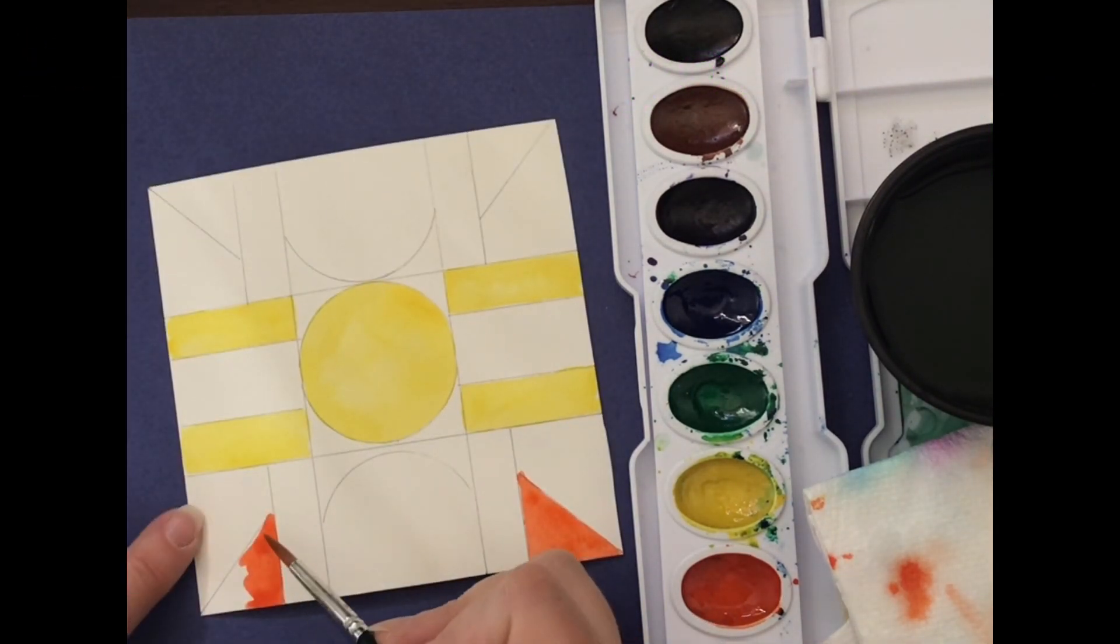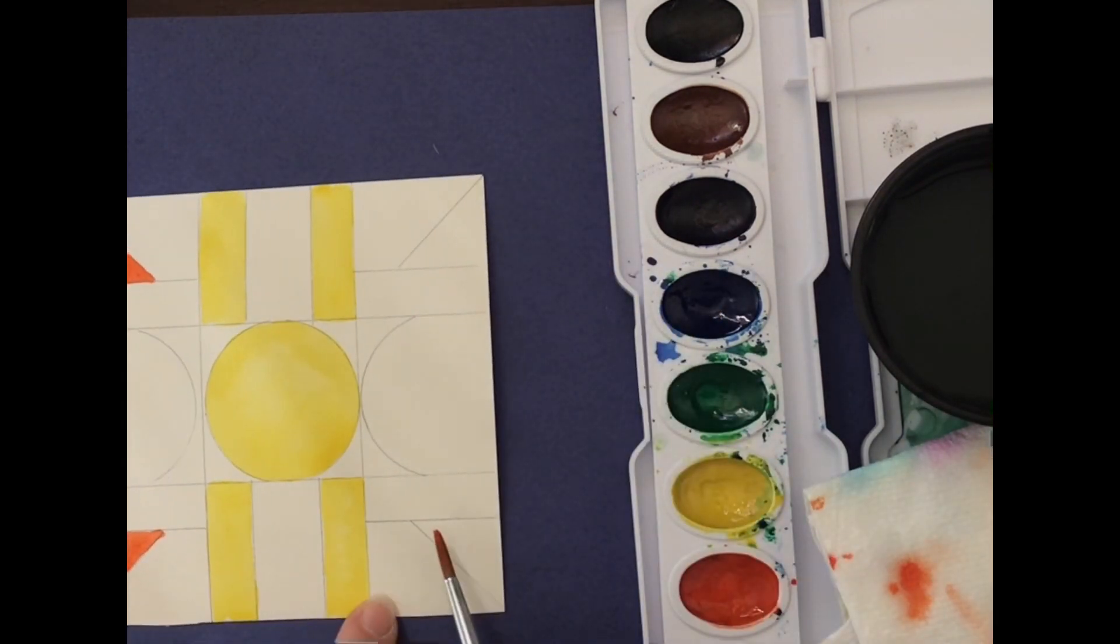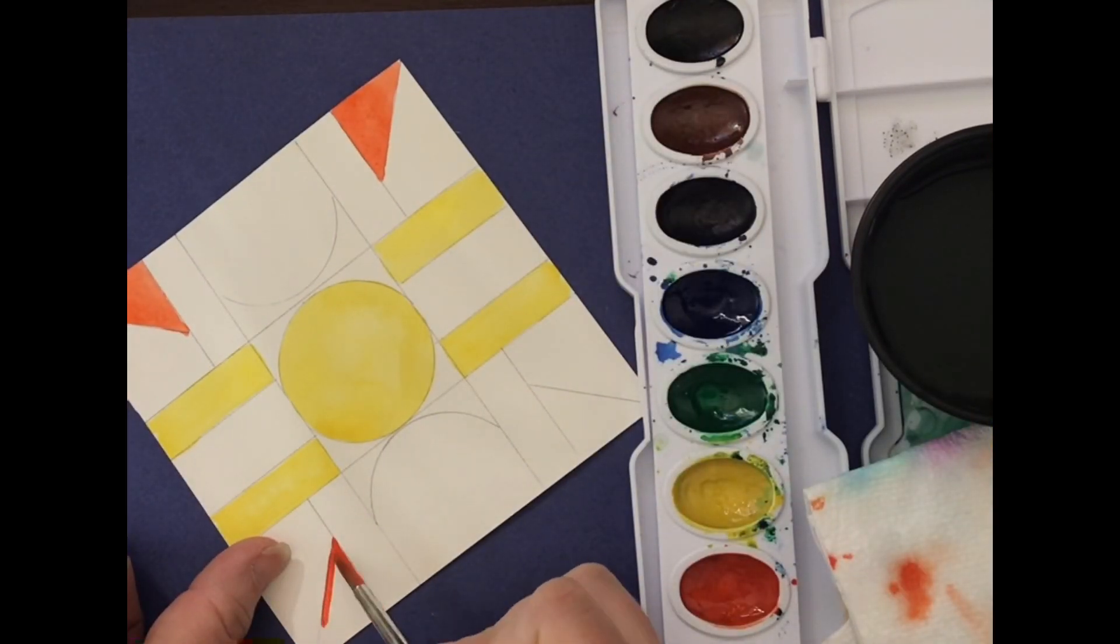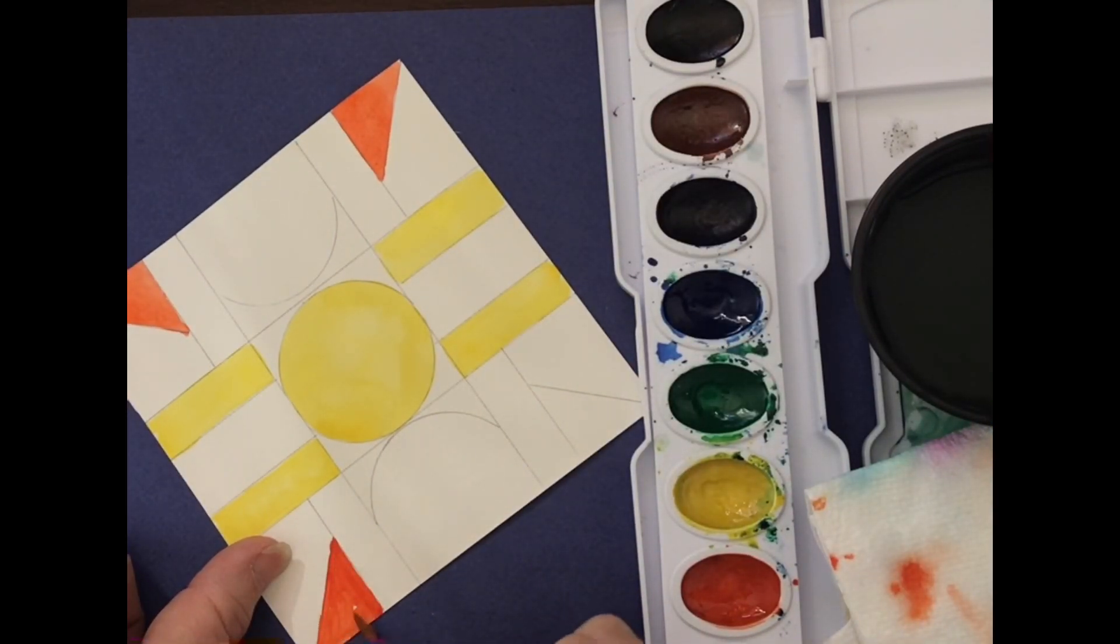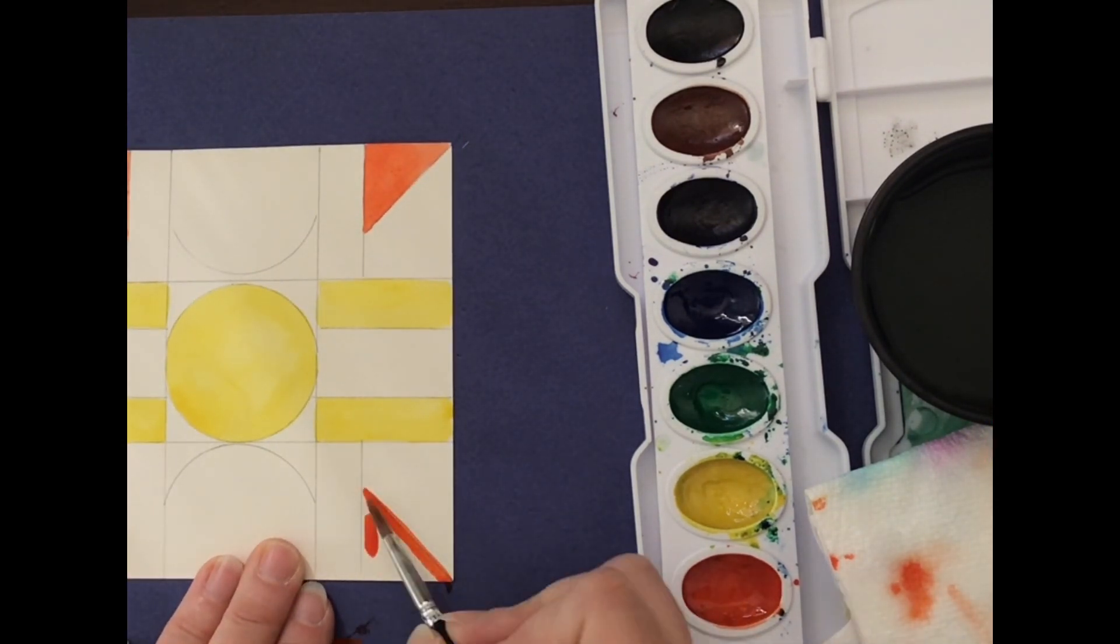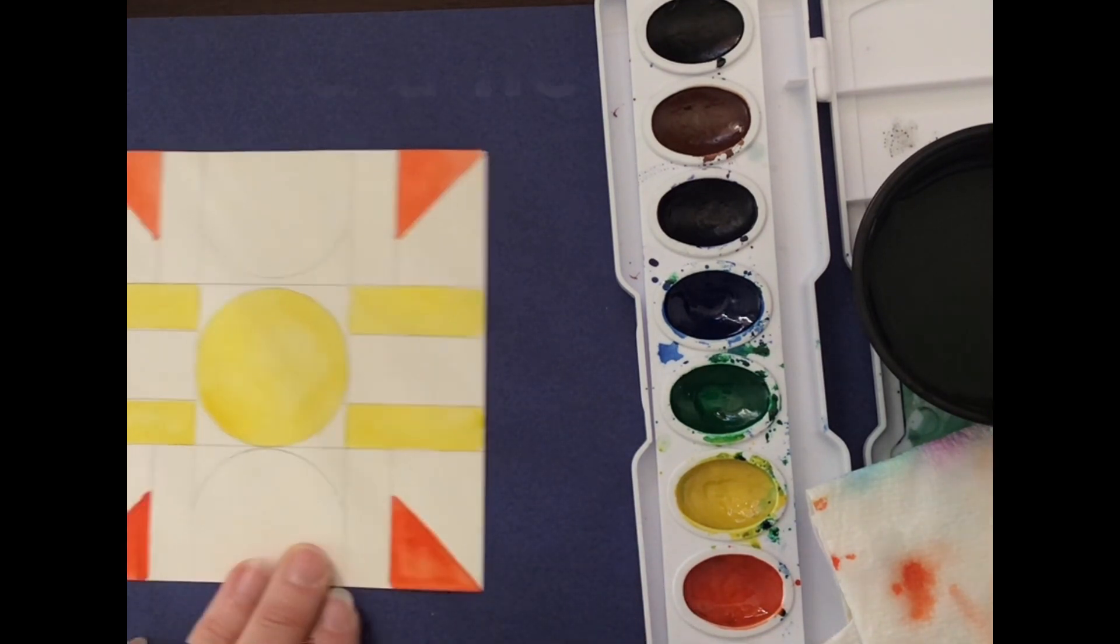Now if you don't like some things, the good news is later on we're going to use some markers or sharpies and you can fix any of your mistakes or color over them. So watch my techniques on how I apply the watercolors. It seems simple, but once you get started it really does help to see where I put my brush, how I stroke the brush, and how little water that I use.